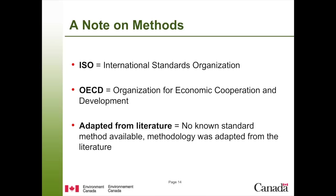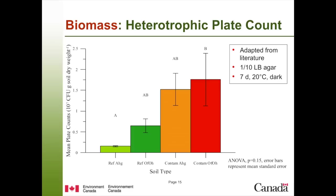For biomass, we looked at heterotrophic plate count, where we take the soil, put it on one-tenth LB agar plates, and incubate for seven days at 20°C in the dark. The contaminated OFOH had a significantly higher number of heterotrophs than the reference OFOH. The contaminated AHG was also greater than the reference AHG, which initially surprised us.